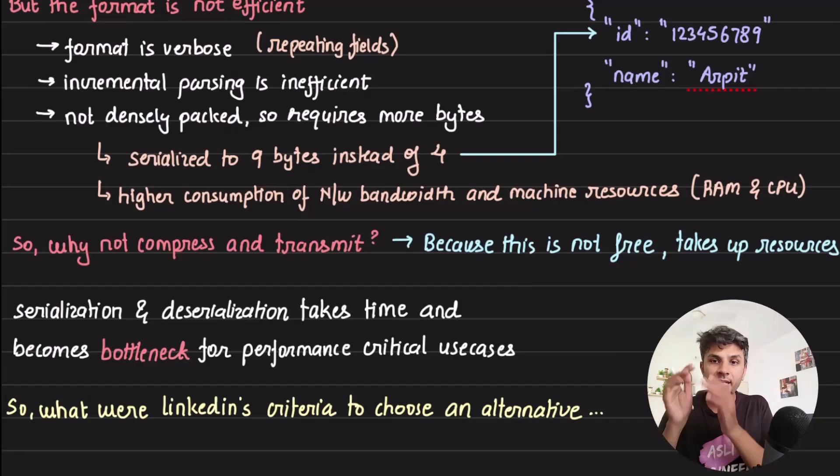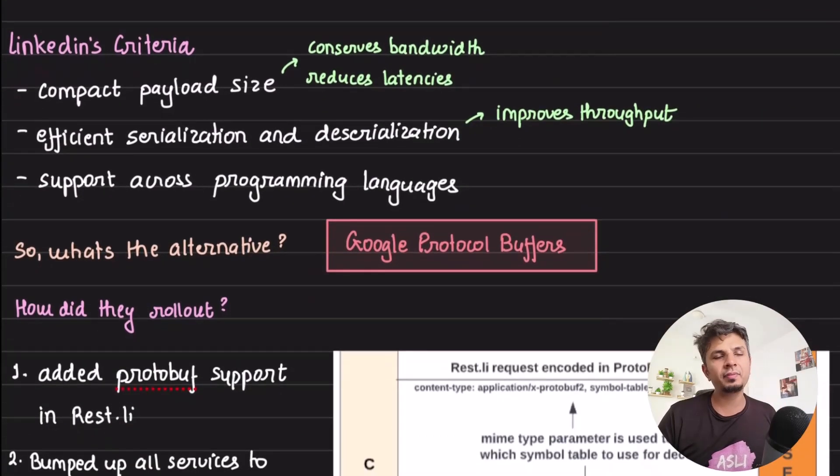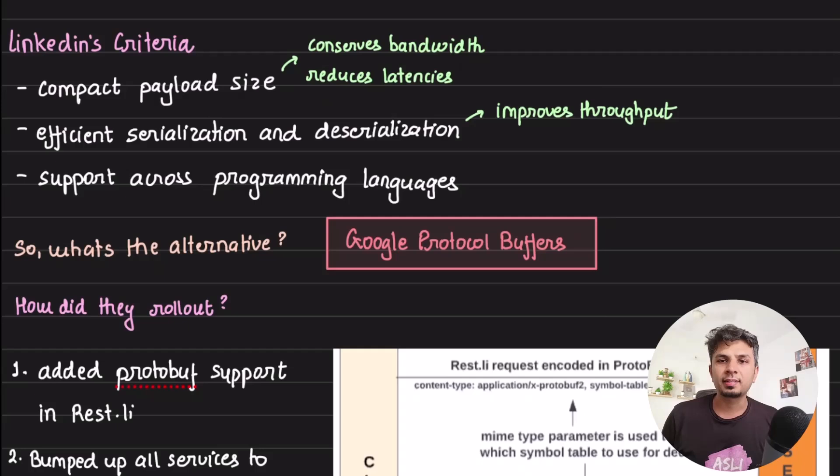So what were LinkedIn's criteria to go for an alternative? The criteria were very simple. First, compact payload sizes. They did not want to take up nine bytes to transmit an integer - just the integer value, and I'm not even talking about the attribute. The packing needs to be extremely compact so that you conserve a lot of network bandwidth and reduce the latency, because fewer bytes to send means it would be received sooner on the other side and you can start processing. So reduce latency, conserve bandwidth - key goals for compact payload size.